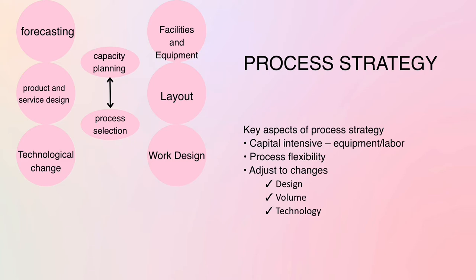The next topic is process strategy. Key aspects of process strategy include: first, capital intensive — referring to business processes or industries that require large amounts of investment to produce a good or service, having a high percentage of fixed assets such as property, plant, and equipment. Second is process flexibility, which refers to the weight of a firm's assets. Third is adjust the changes — the process must be flexible to incorporate changes in design, volume, and technology.